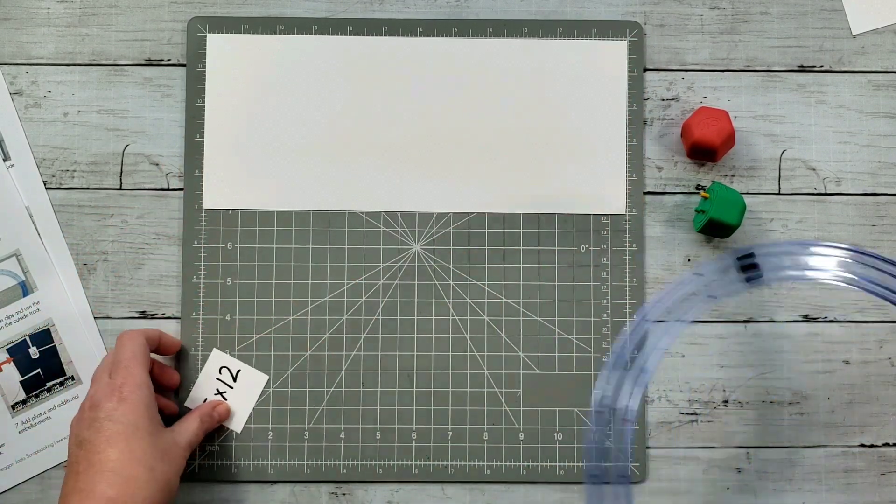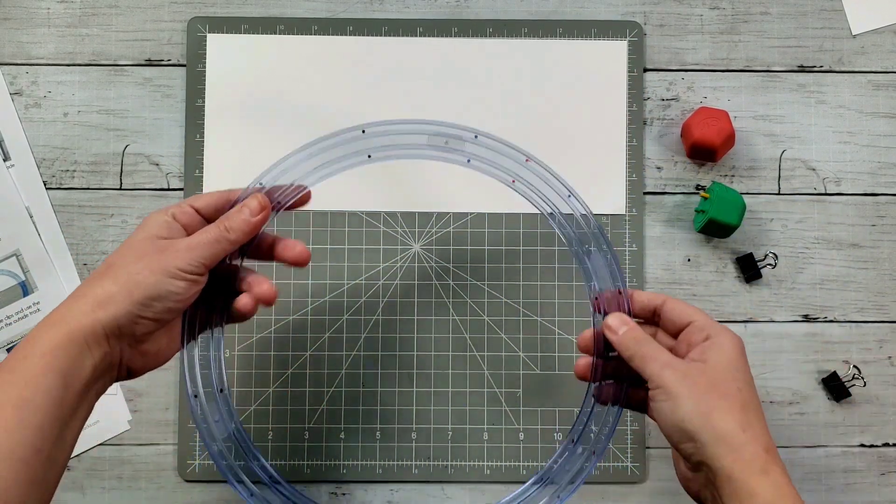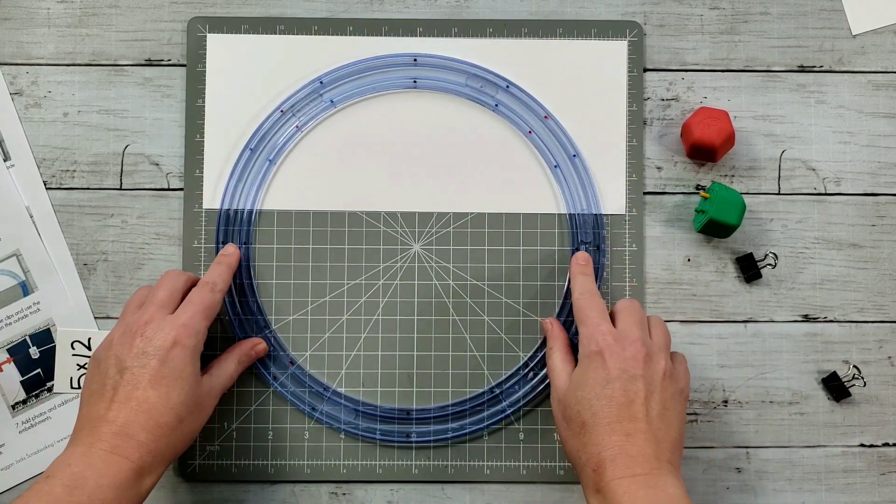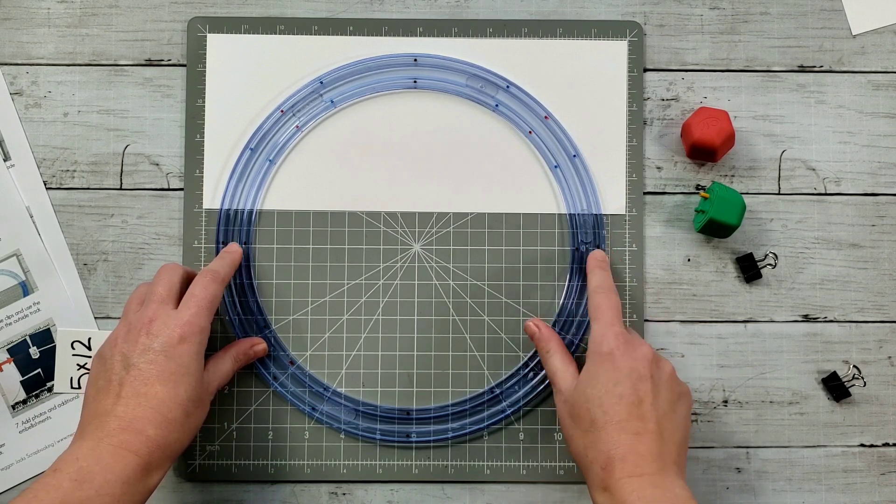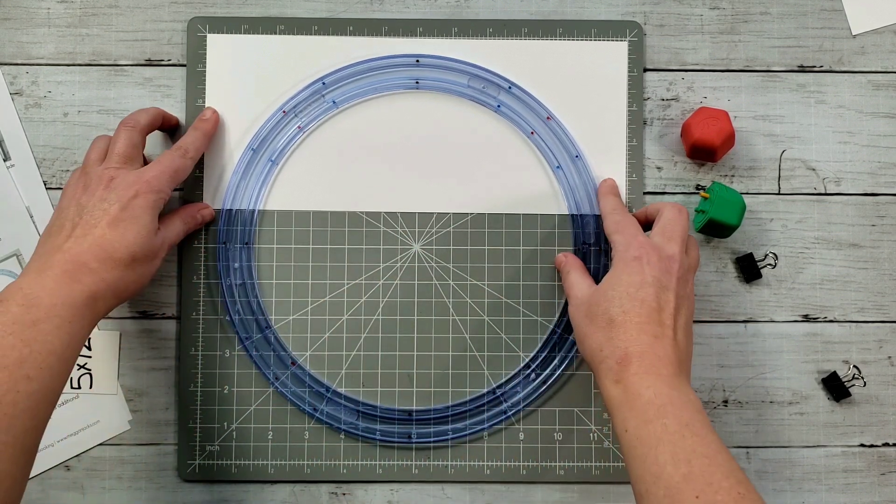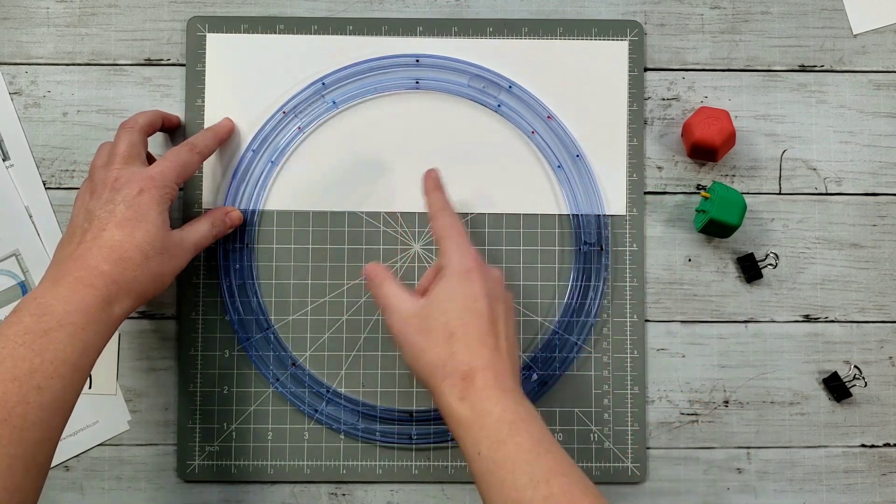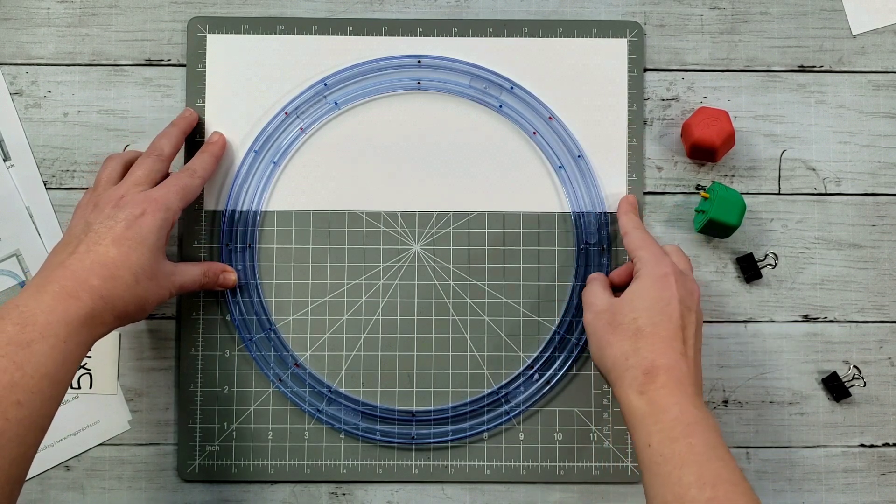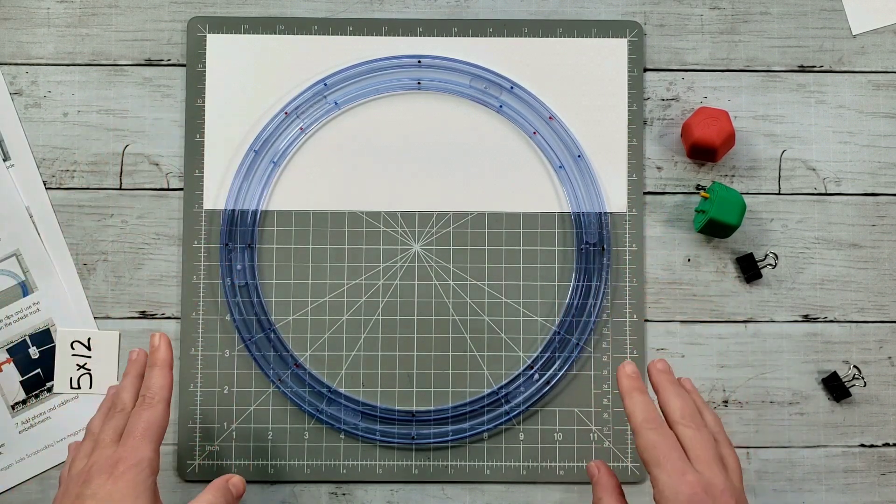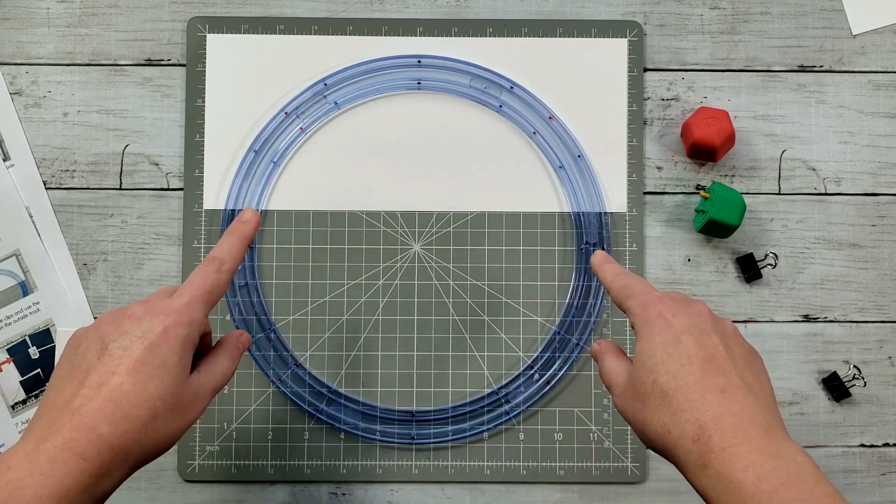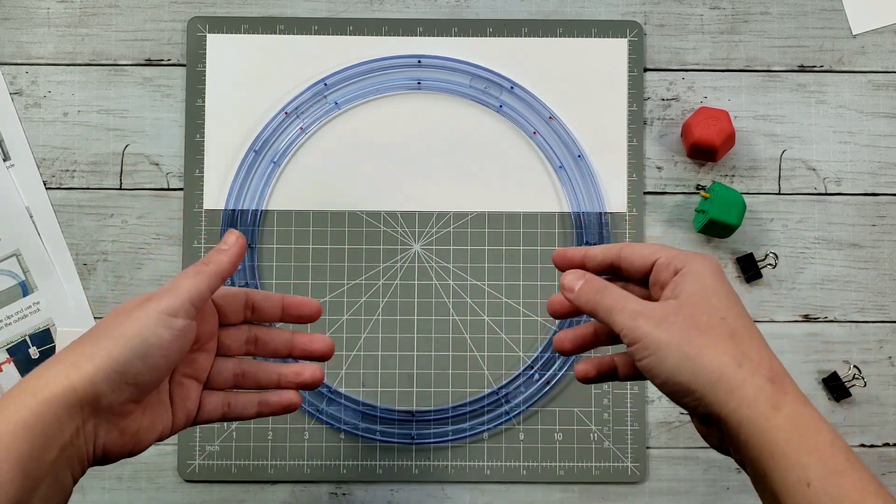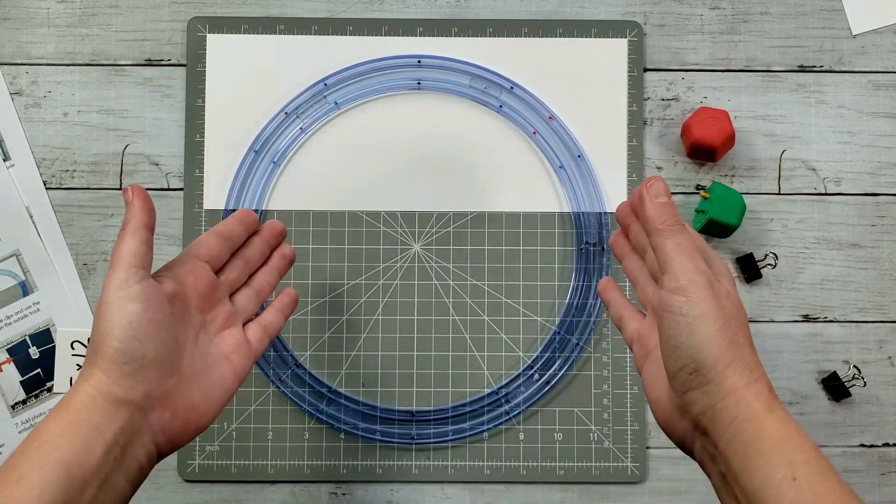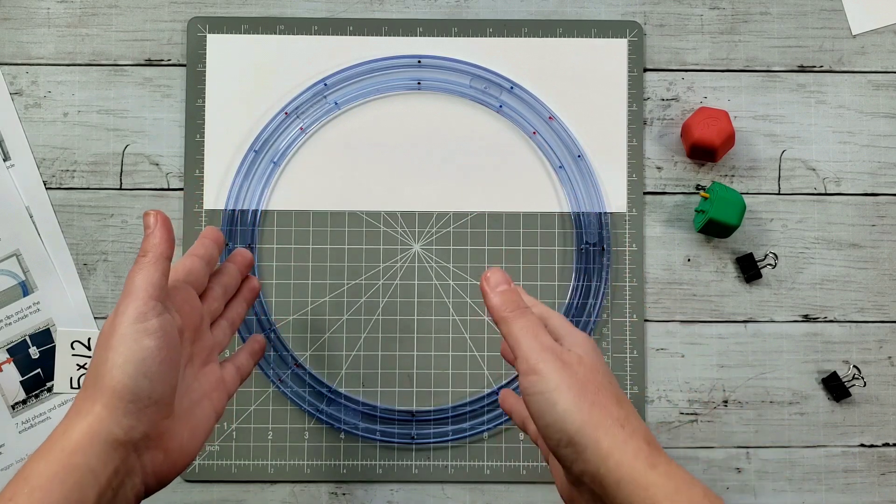Five by 12, I'm lining up here at the top edge. And then I'm going to go ahead and center my jumbo circle on my trimming mat. So I've got my center lines marked, zero and 180 degrees. And then I've got my 90 degrees, which I'm lining up across the top.